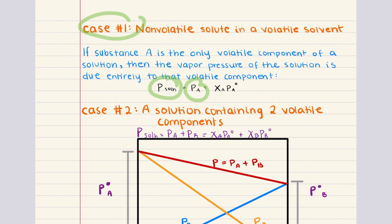We can write this expression as: vapor pressure of solution equals X_A times P_A^0. Here, X_A is the mole fraction of the solvent in the solution, and P_A^0 is the vapor pressure of the pure solvent. This equation shows that the vapor pressure of the solution is directly proportional to the mole fraction of the solvent. As the concentration of the non-volatile solute increases, the vapor pressure of the solution decreases.